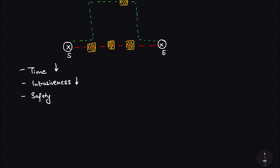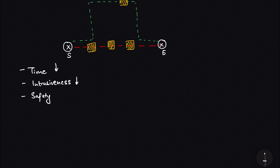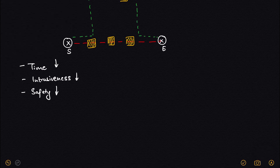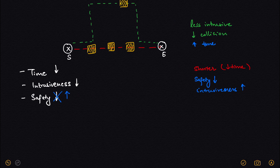Let's have a quick example. We have certain parameters: time, intrusiveness, and safety. These are the objectives we care about. An agent needs to go from a starting point to an end point in minimum time, with minimum intrusiveness. The brown objects on the paths represent desks where people might be sitting — the robot should not pass near them because people might feel their private space is being intruded.